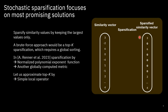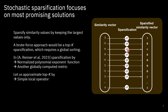To approximate the top-k sparsification using a simple local operator, we introduce threshold-based sparsification. We define a certain threshold for a given problem: if the similarity value is greater than the threshold, we let it pass through; for other cases, we zero them out. In this example, we select a threshold around plus one, so everything less than or equal to one is cut off to zero and everything above is passed through.